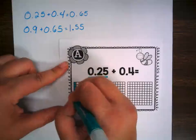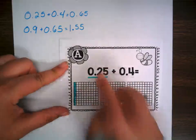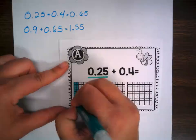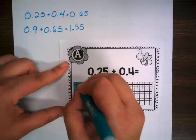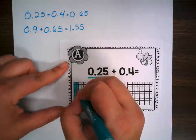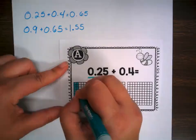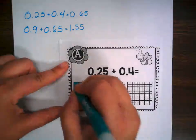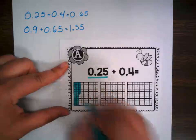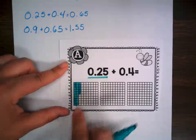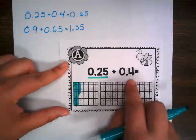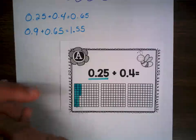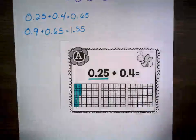This first number I'm going to put in green. So I'm going to fill in 25 hundredths in green — two rows of tenths because there are two tenths, and then five hundredths. So now I have 25 hundredths shown. Now I'm going to add four tenths to this as well.